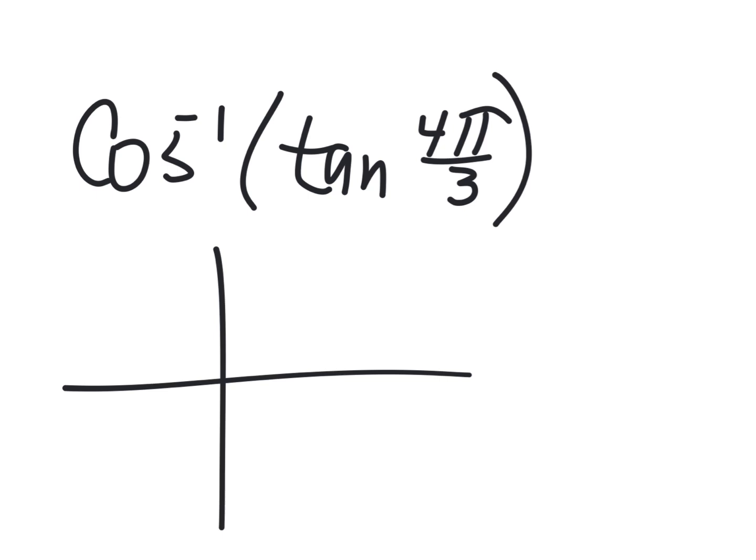So if I give you inverse cosine of tangent of 4π over 3, kids get confused by this, I totally understand, because they're like, wait a minute, I don't think you can do inverse trig there. But, start with this, and don't even look on the outside of the problem until you're done with the first part.